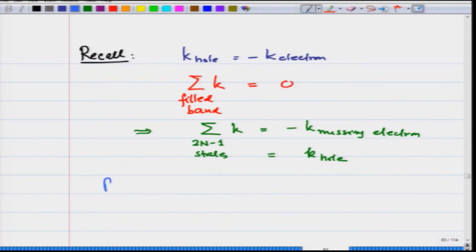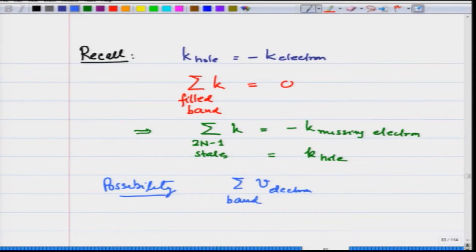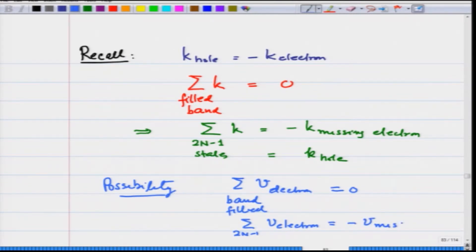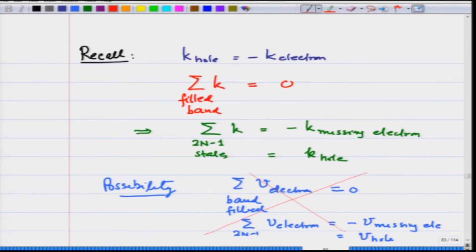One possibility is that I say the summation of v electron over the whole band is 0, and therefore the summation of v electron over 2n minus 1 states is equal to minus v of the missing electron, which would be v hole. But this does not sit properly with what we derived earlier — so this is incorrect. Let us look at what error we are making.